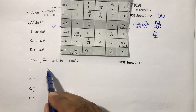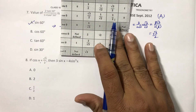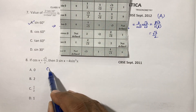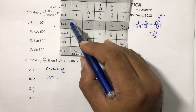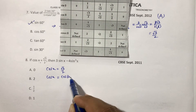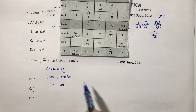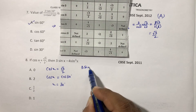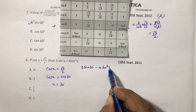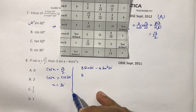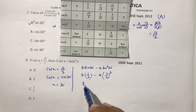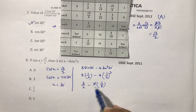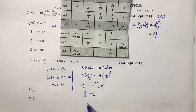If cos x equals root 3 by 2, find 3 sin x minus 4 sin cubed x. From the table, cos 30 is root 3 by 2, so x equals 30 degrees. Substituting: 3 sin 30 minus 4 sin cubed 30. Sin 30 is 1 by 2, so: 3 by 2 minus 4 times 1 by 8, which gives 3 by 2 minus 1 by 2 equals 2 by 2 equals 1.